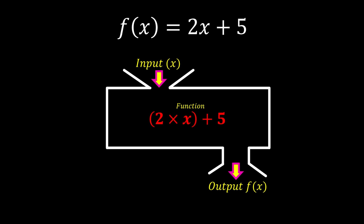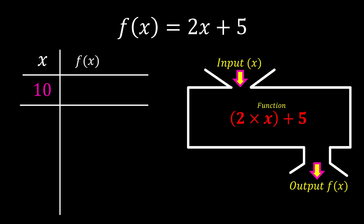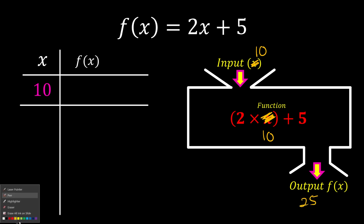Once we get the result, we give it back to you as the output. So let's say you tell me 10 — once I know 10 is your input, I erase the unknown. So 2 times 10 is 20, and 20 plus 5 is 25. Once I finish processing, I give it back to you and tell you: this is the result, 25.